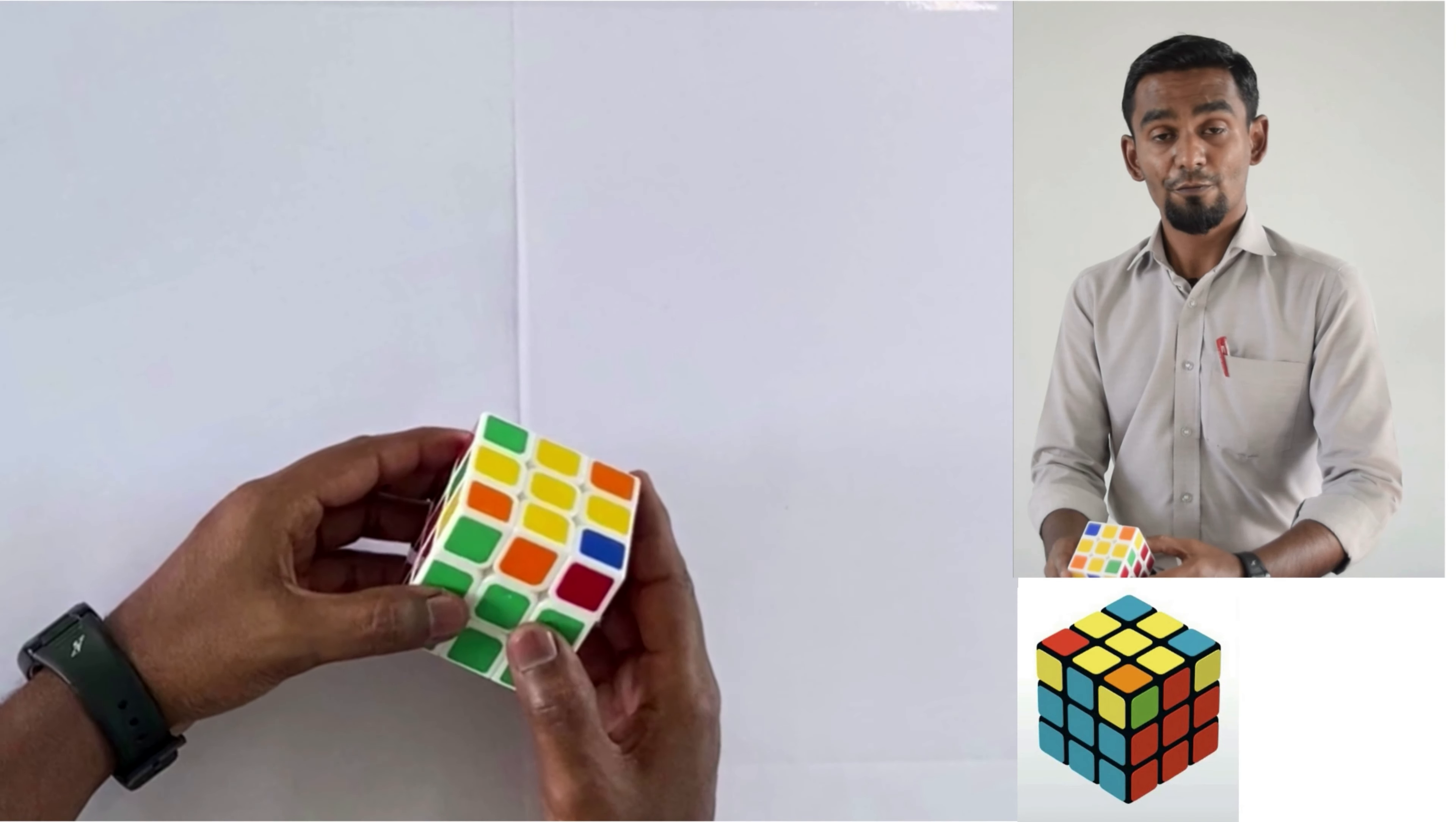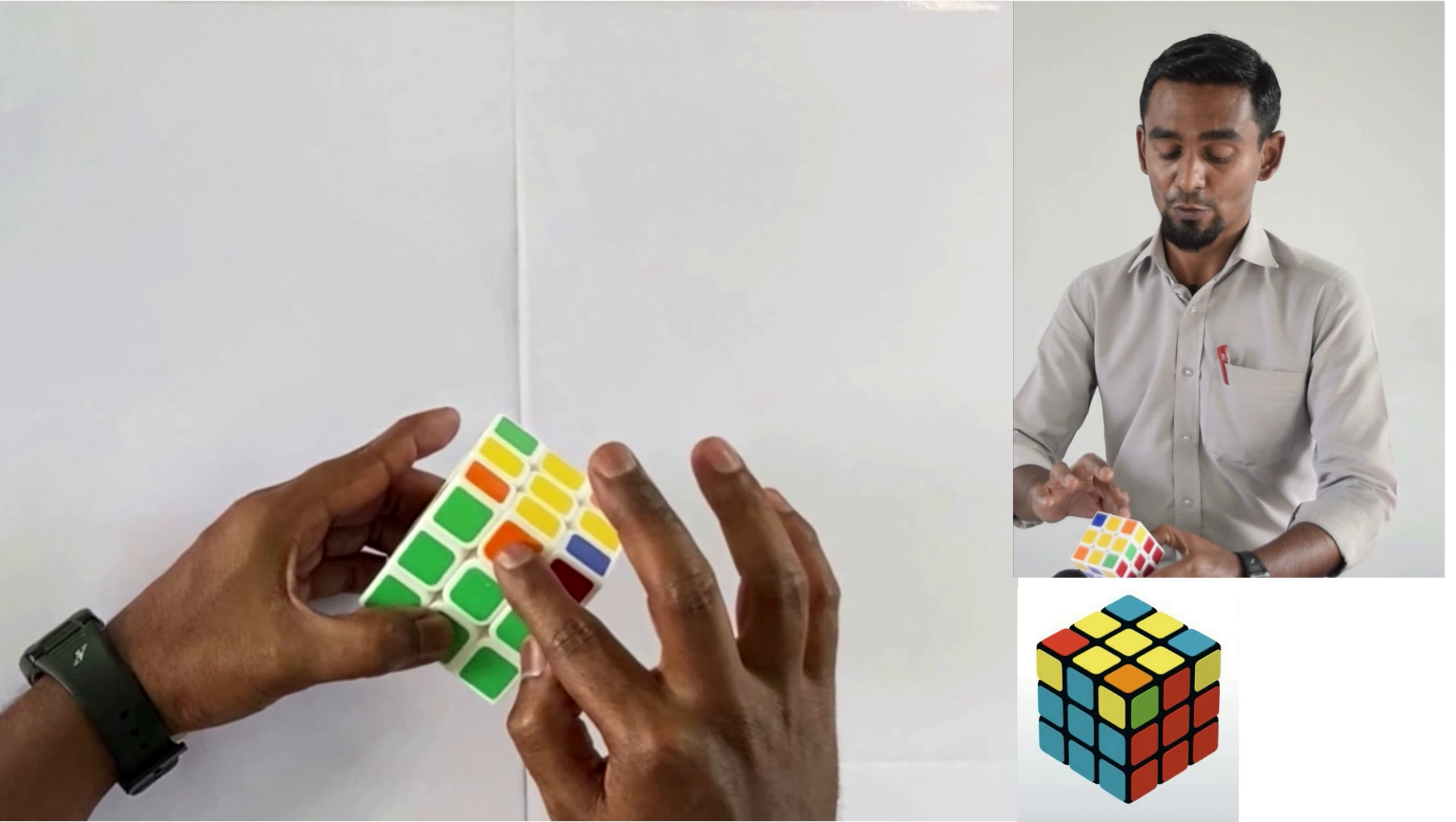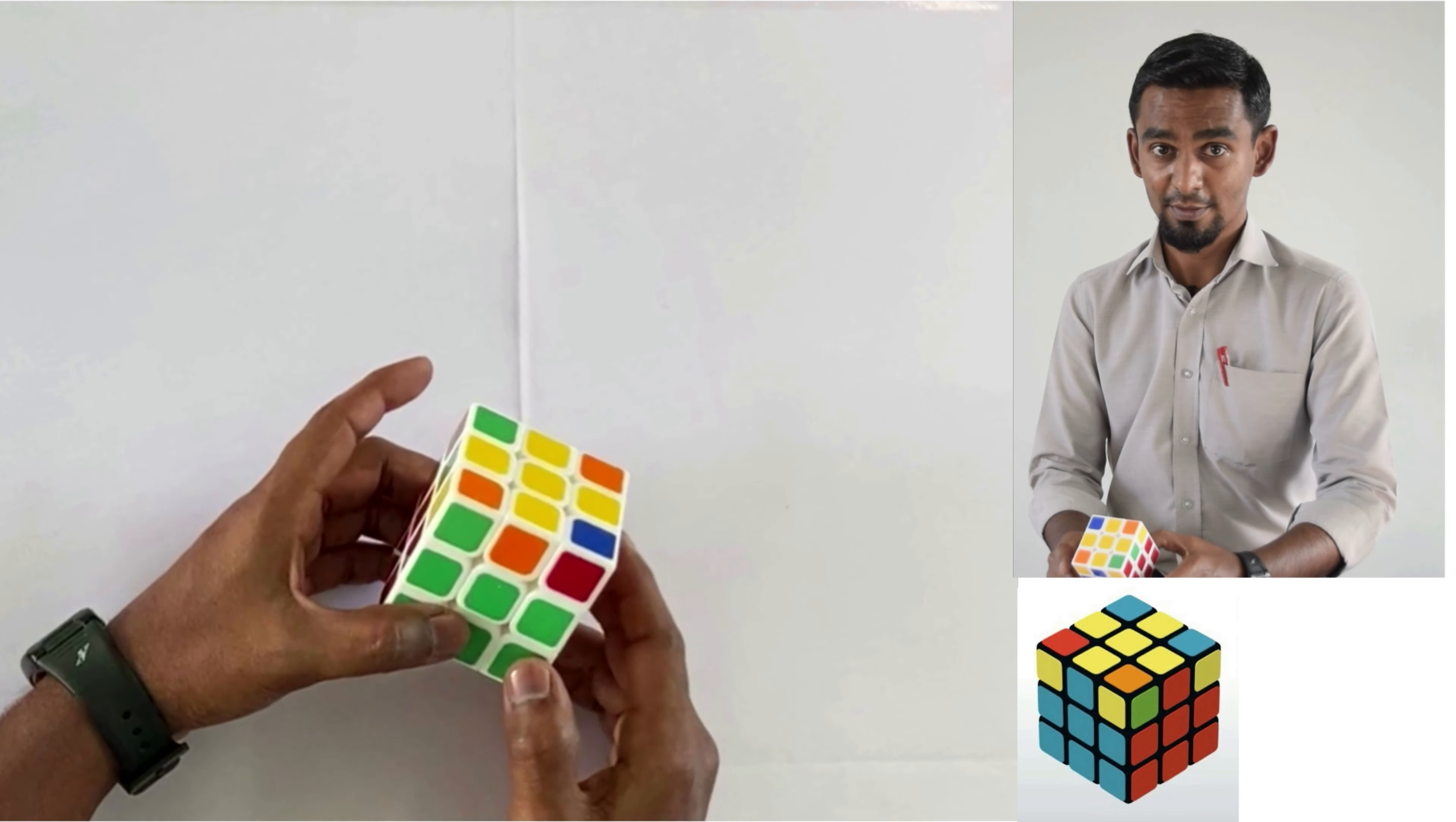So first is step 5. Just to remind you, step 5 is matching the yellow edge tiles to the central tile color of each face. Please listen, the formula is this.